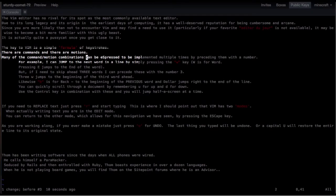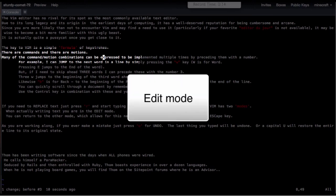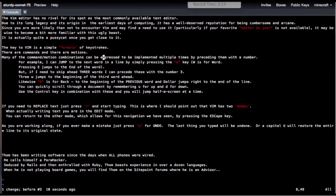If you need to replace text, just press R and start typing. This is where I should point out that Vim has several modes. When actually writing text, you are in the edit mode. You can return to the command mode, which allows us this navigation we have seen, by pressing the escape key.